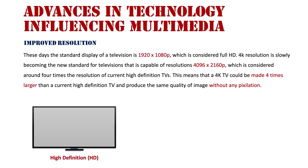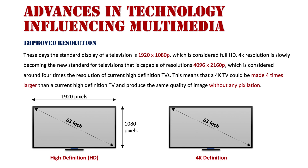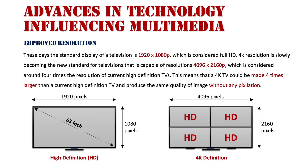Here is my high definition TV and here is my 4K TV — both are the exact same size, they are 65-inch TVs. I'm using inches as the standard format because that's how TVs are sold, even in Australia where we don't typically use inches. My HD TV is 1920 pixels by 1080 pixels. My 4K TV is 4096 pixels by 2160 pixels. The amount of pixels in a high definition TV could fit 4 times into that one 4K screen, so 4K is 4 times larger than HD by the amount of pixels used to produce its screen resolution.